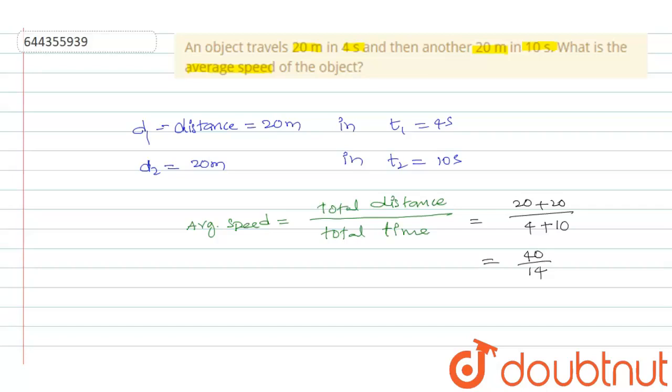Now, if you want to further simplify, you can simplify. Like 2, 7 is 2, 20 is 20 by 7. This is your answer. So average speed is 20 by 7.